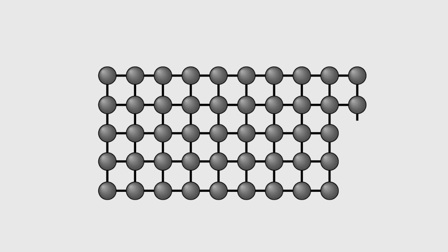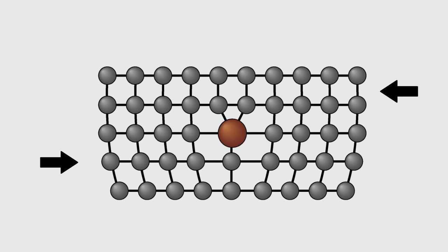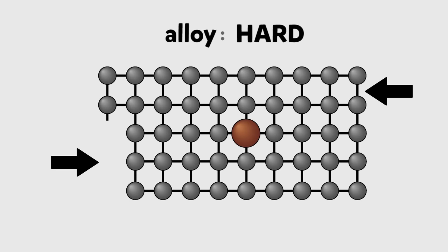Now put a smaller or bigger atom into the lattice and this easy movement of the dislocation is blocked. See the way the bigger atom stabilizes the dislocation which gets no further unless you put greater force, meaning that it's harder to bend the alloy.